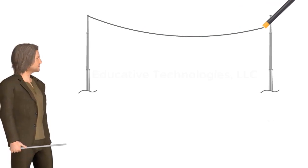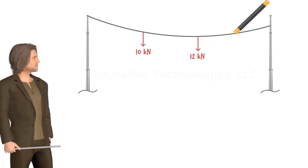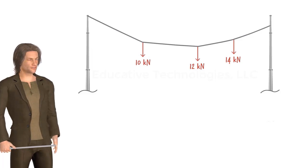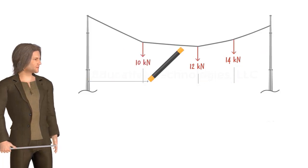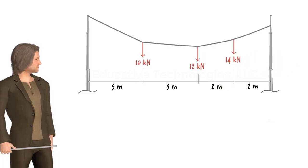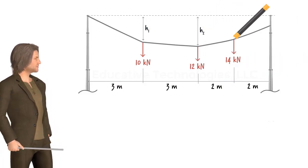Consider a cable attached to two poles at its ends. Hanging from the cable are three concentrated loads. The cable sags under the applied loads forming a stable configuration in which the conditions of static equilibrium are maintained. Assuming that the horizontal distances between the loads and the support points are known, we can describe the shape of the cable using four heights.